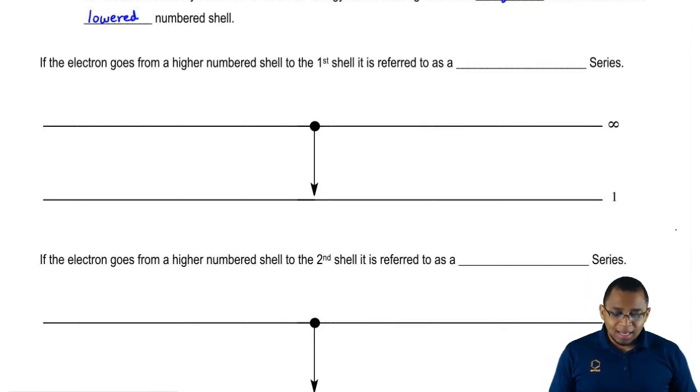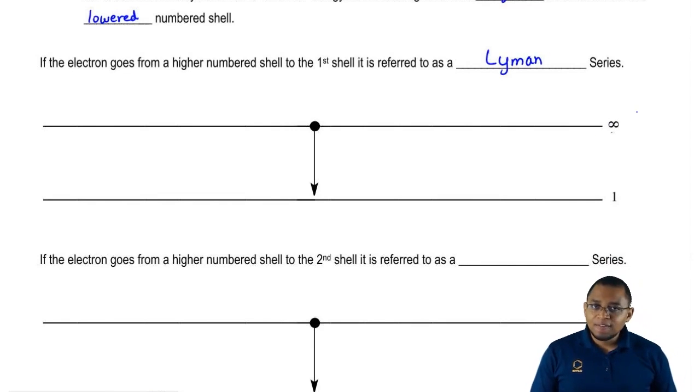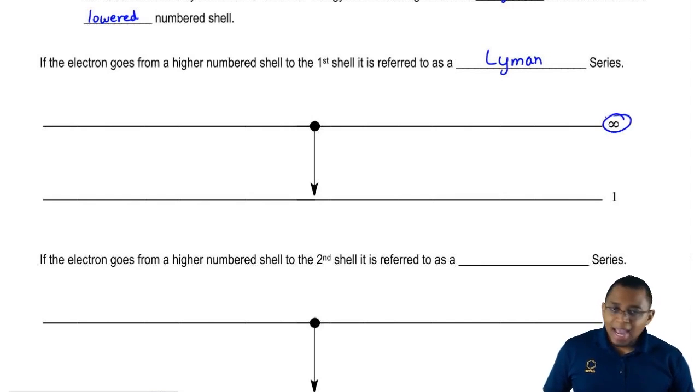If the electron goes from a higher numbered shell to the first shell, it's referred to as a Lyman series. Here we have the sign infinity, meaning that we could start from any shell, shell 2 to shell 7, it doesn't matter. As long as we wind up going back down to shell number 1, it's going to be a Lyman series.